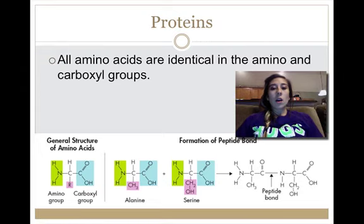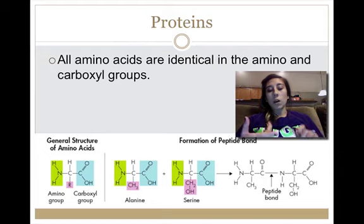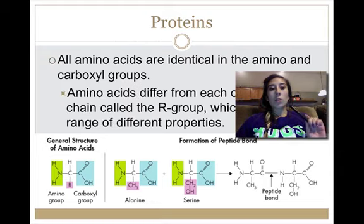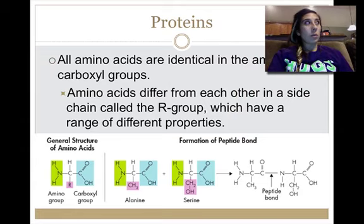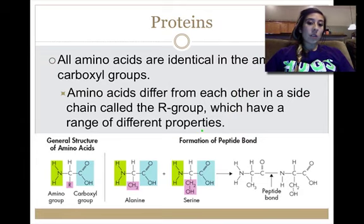All amino acids are identical within the amino group and the carboxyl group. So all amino acids have the amino group, carboxyl group. But where they differ is where we see this R group.